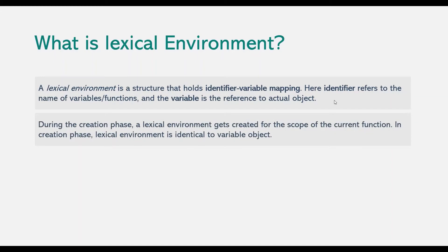During the creation phase, a lexical environment gets created for the scope of the current function. In the creation phase, this lexical environment is identical to the variable object — it contains all the variables and functions declared inside the function of the current execution context. But this lexical environment gets updated during the execution phase, and at that time it contains the variables and functions defined in the current scope, plus an outer variable which points to its parent scopes.